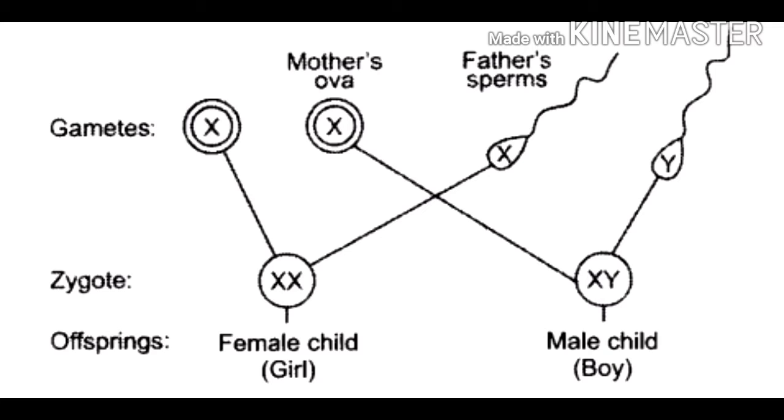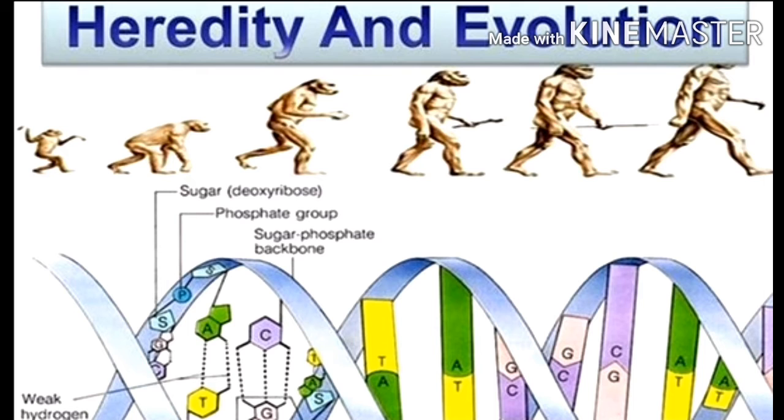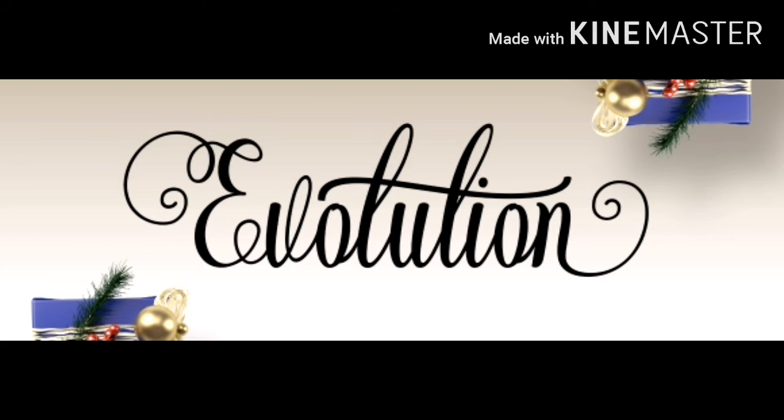Girls receive their second X chromosome from father and boys receive their Y chromosome from father. When egg is fertilized by X chromosome of father, a girl child is born. When egg is fertilized by Y chromosome of father, a male child is born. Now let's study about evolution.